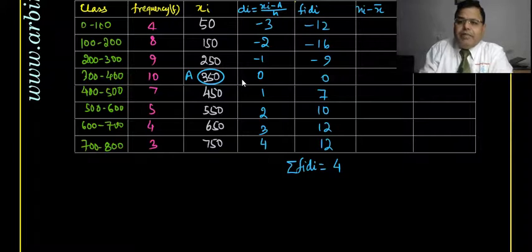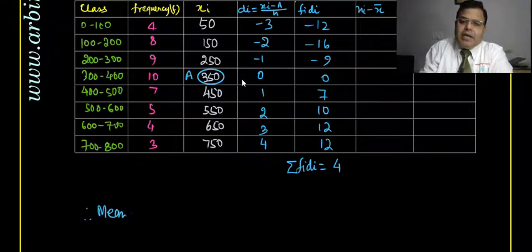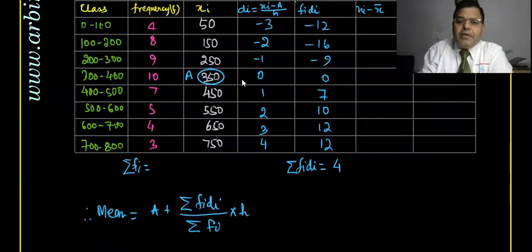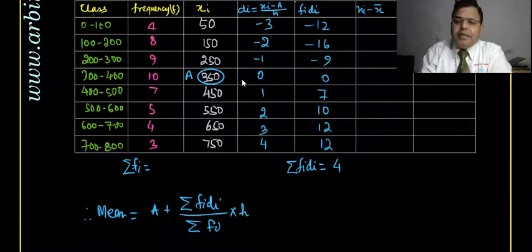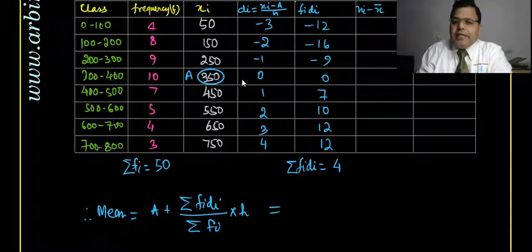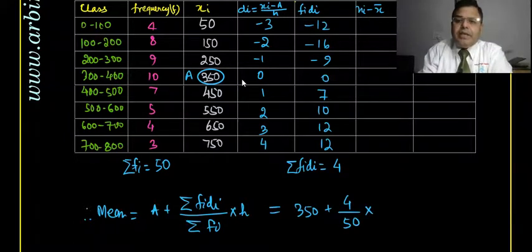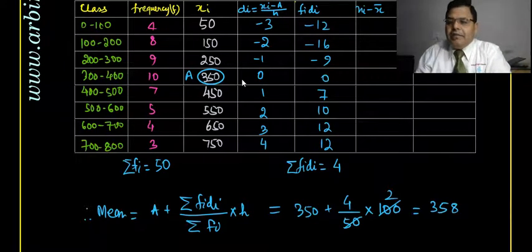Σfi·di = +4. Now Σfi = 4+8+9+10+7+5+4+3 = 50. So mean = a + (Σfi·di / Σfi) × h = 350 + (4/50) × 100 = 350 + 8 = 358. The mean of the data is 358.